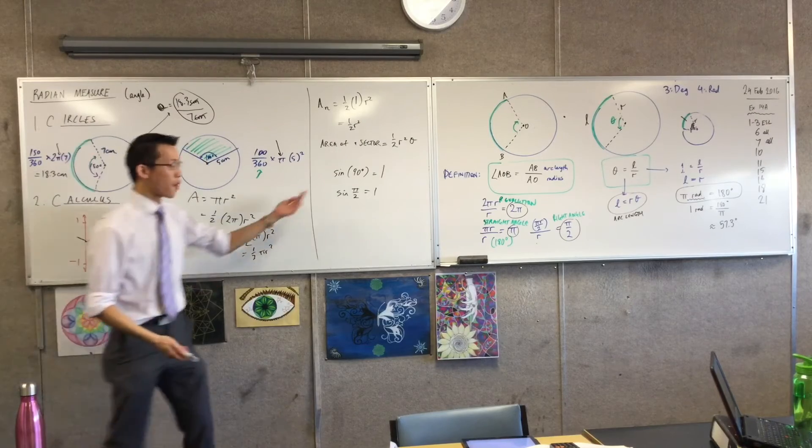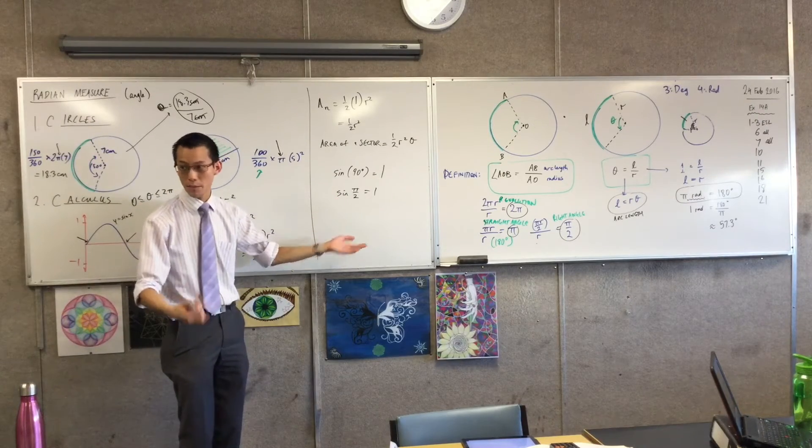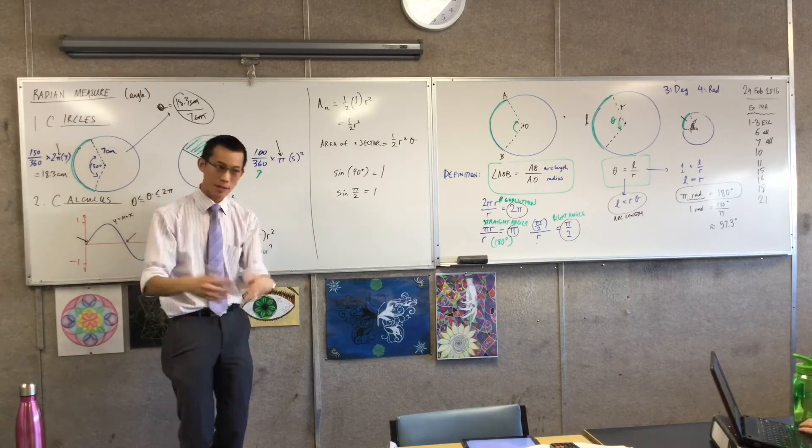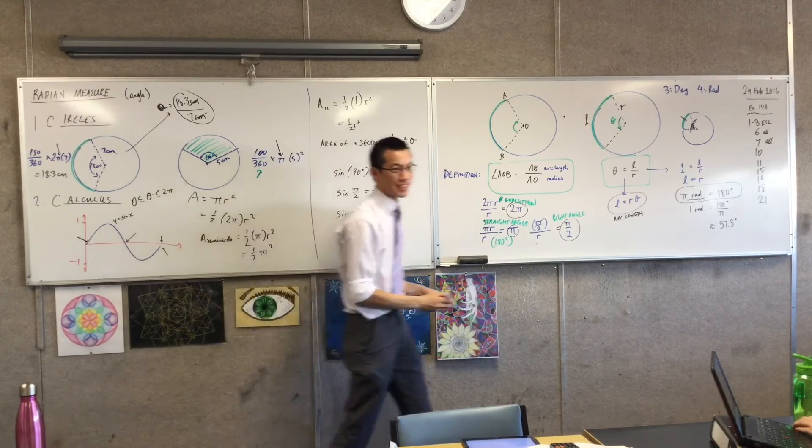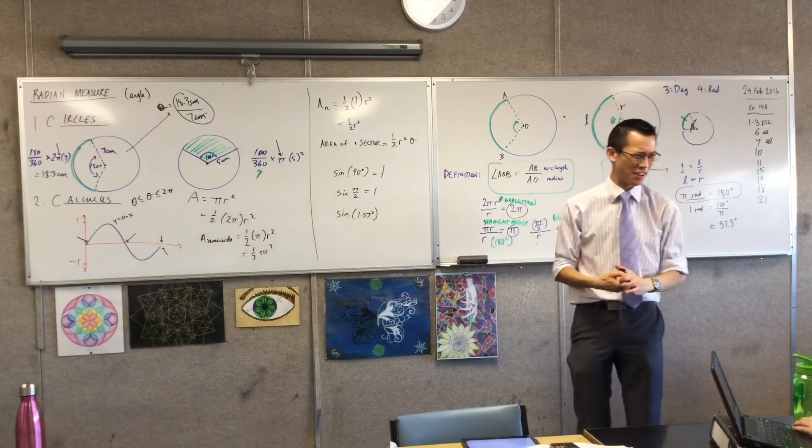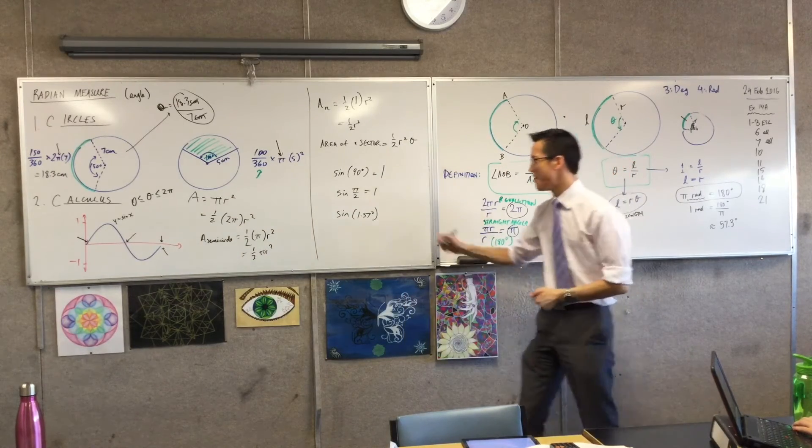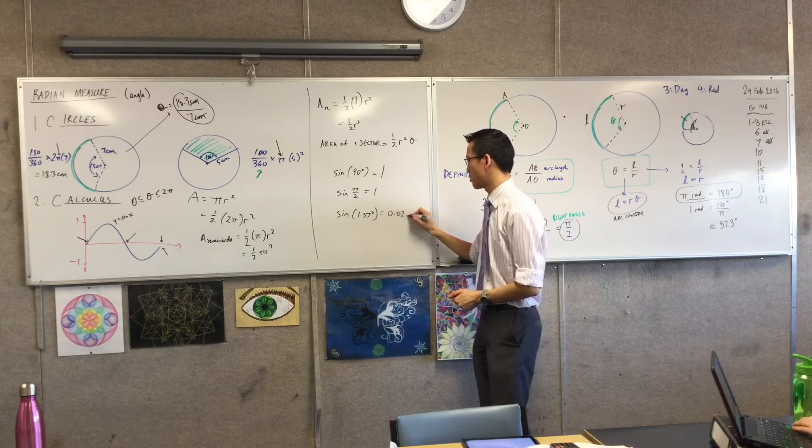I'm in degrees mode, and remember, pi on 2 is just a number. I was just saying before, it's 3.14 divided by 2. So it's interpreting you as saying this. Now, that's a really tiny number. It's a tiny angle. No one ever measures an angle that small. That's why its sine is something like 0.02, something like that.